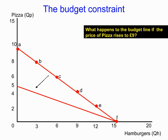What would happen if the price of one of our goods changed? If the price of pizza goes up to nine pounds, going back to our income of forty-five pounds, we can no longer buy as much pizza. Whereas before we could buy ten pizzas spending all forty-five pounds, now with the price rising from four pound fifty to nine pounds we can only buy five pizzas. We still have the same choices regarding hamburgers, but the budget line rotates inward on the pizza axis.